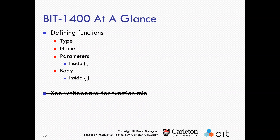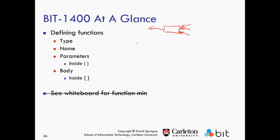Our function generally looks like this — we have something going in, maybe three things going in, and one thing going out. The number of things going in can be variable; one thing goes out. Let's figure out a good example function — let's do minFactor.